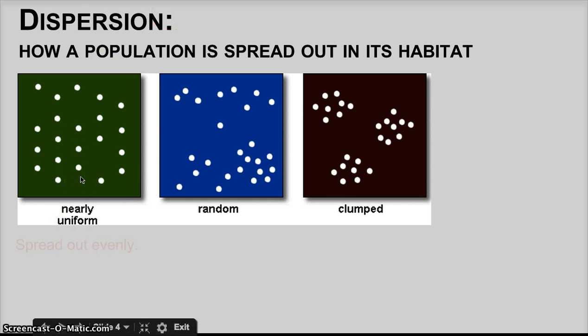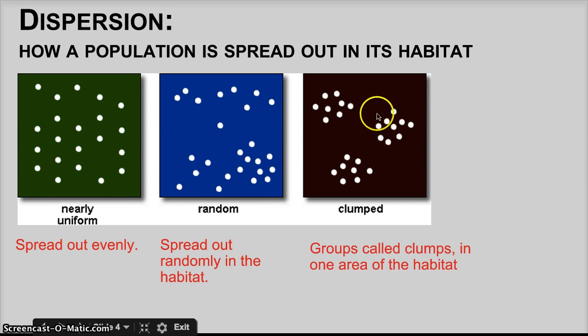The first one we can talk about is nearly uniform. These are individuals within a population that are spread out evenly. We can also talk about random. There doesn't seem to be any reason. Some are clumped, some are spread out. Some areas have no individuals from that specific population. And then we can talk about clumped, where individuals within a population group together in very specific ways in the habitat.